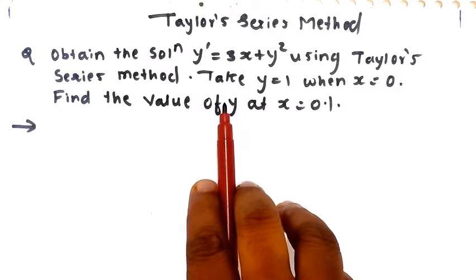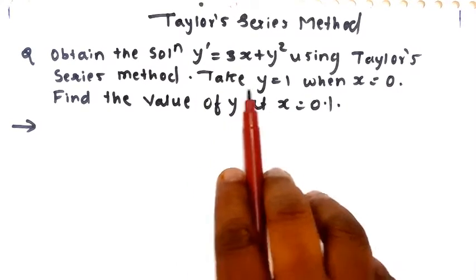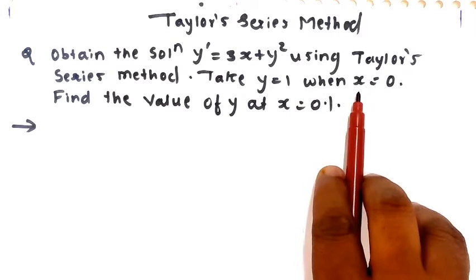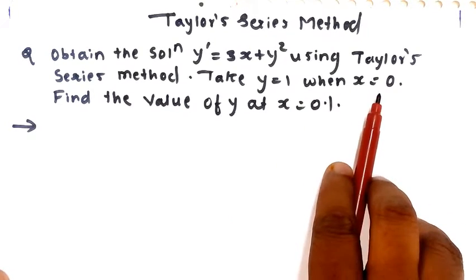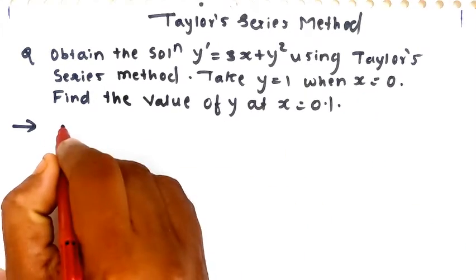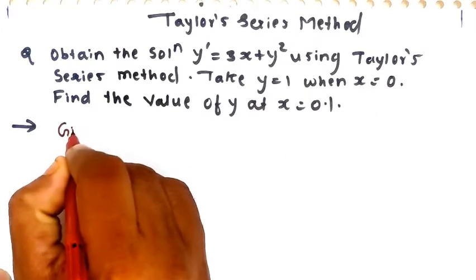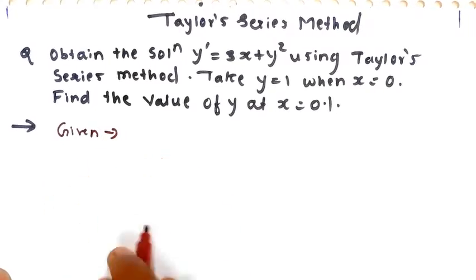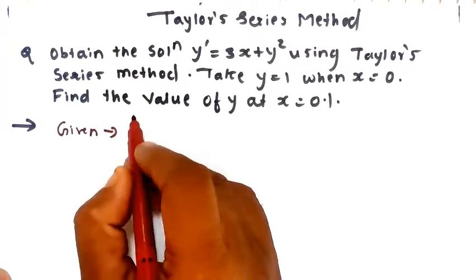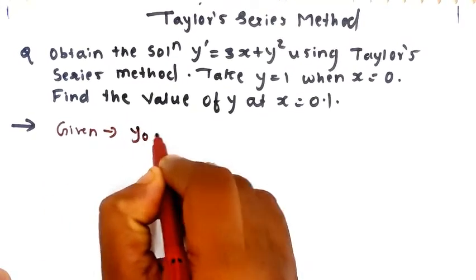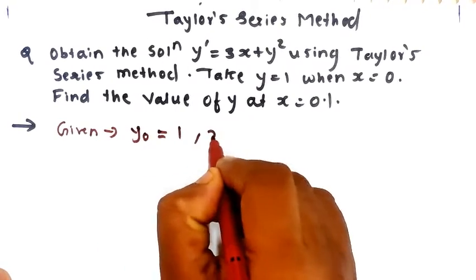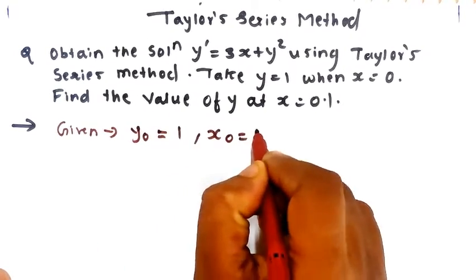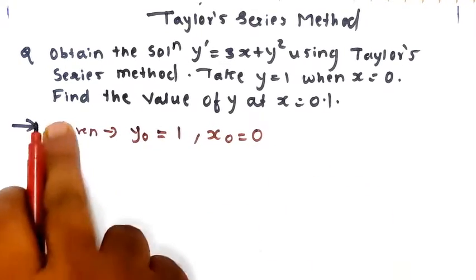The initial condition is given: y = 1 when x = 0. So the value of y₀ and x₀ is already given. In given notation, y₀ = 1 and x₀ = 0.